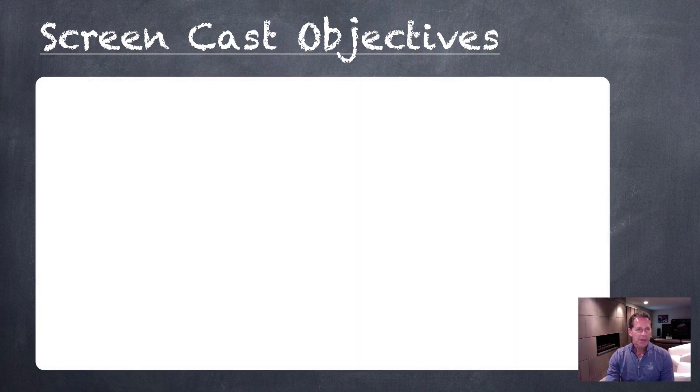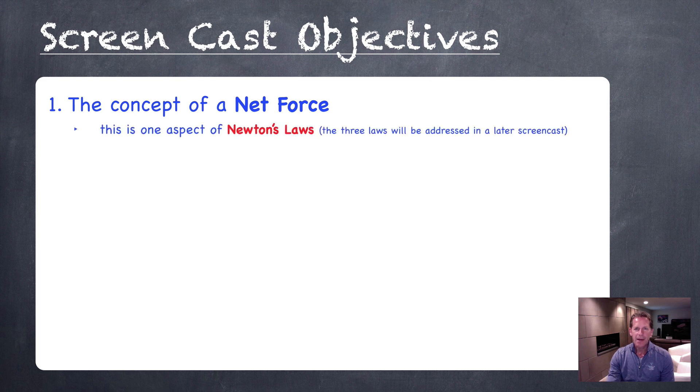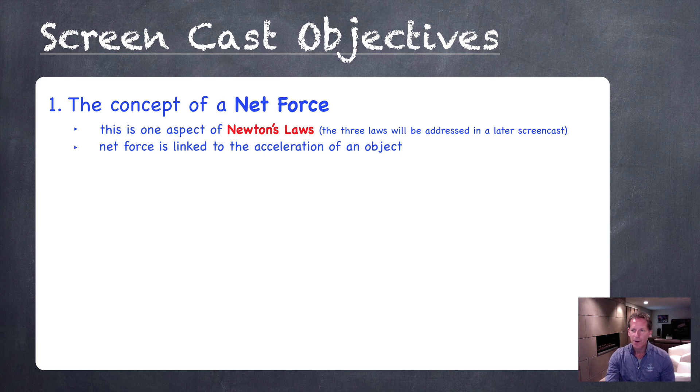Our first objective has to do with the concept of a net force. This is an aspect of Newton's three laws of motion, aspect of his first law actually. We're going to address Newton's laws in much more detail in upcoming screencasts, but this is a bit of an introduction to his first law. The net force is something we can use to find out about how an object will behave - will it speed up, slow down, stay where it is.